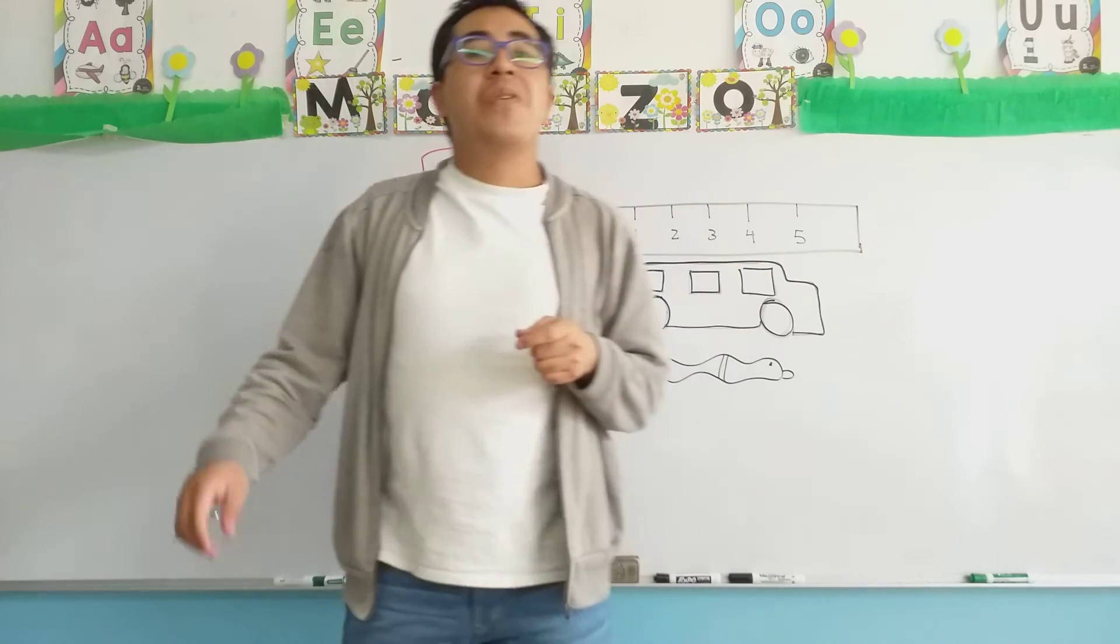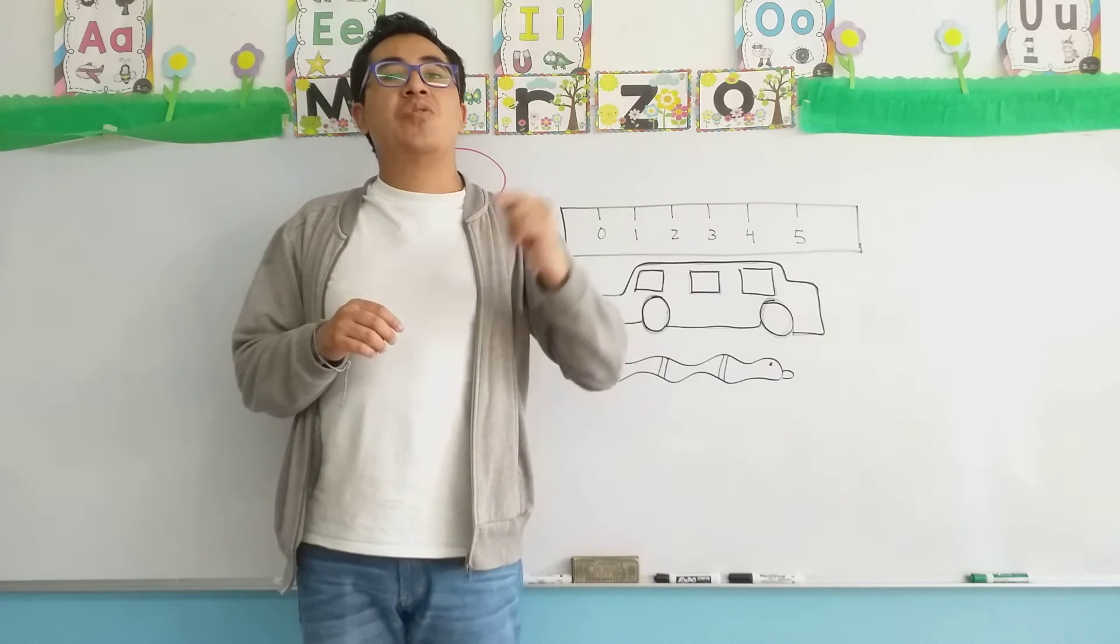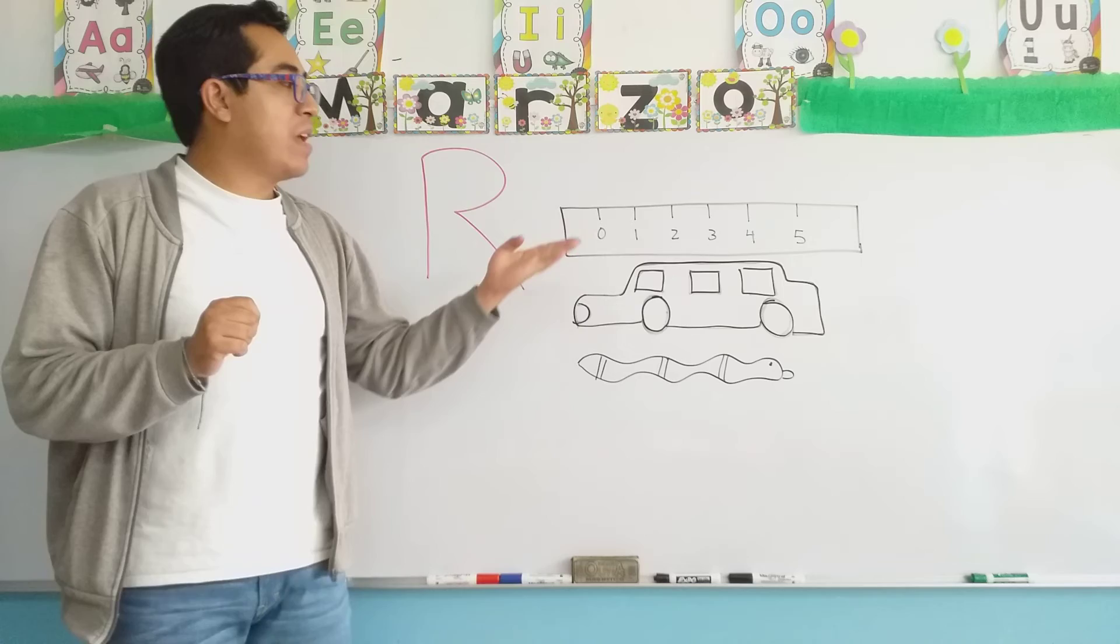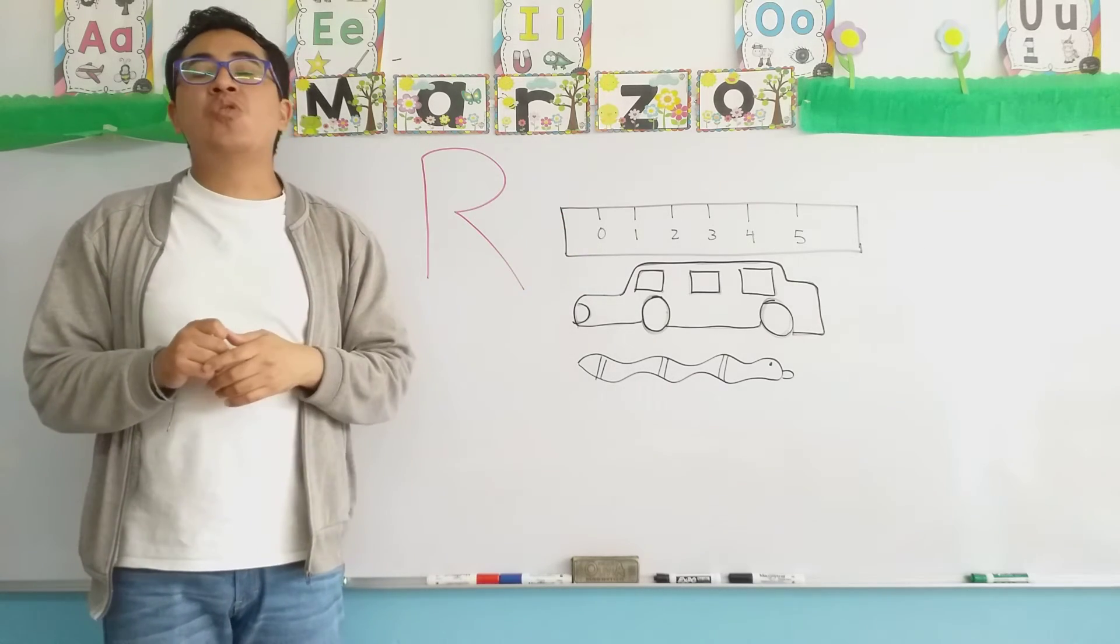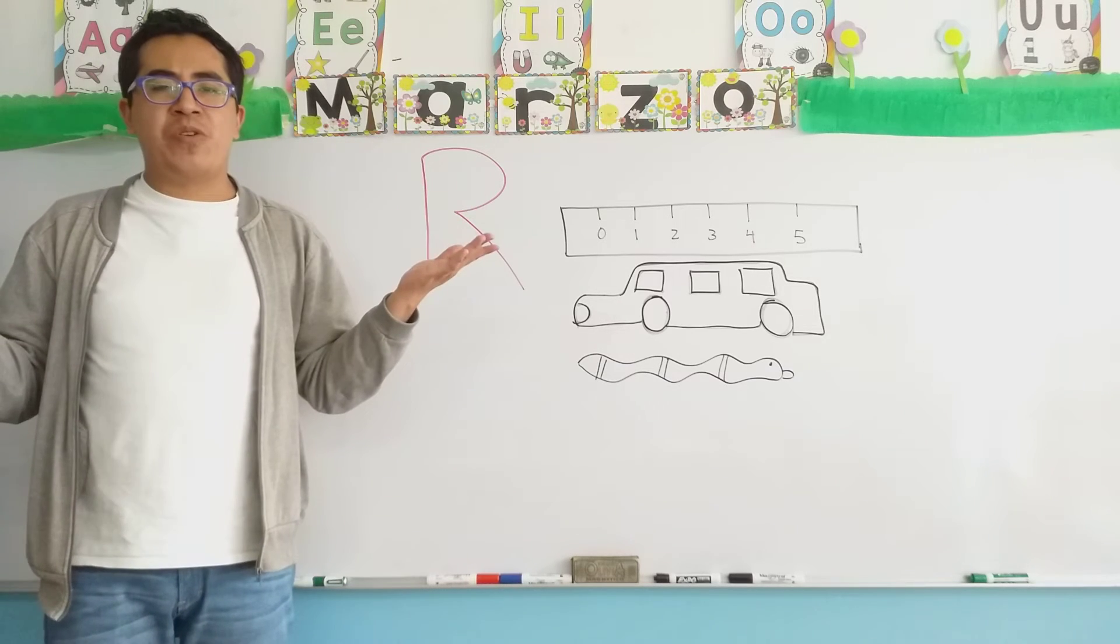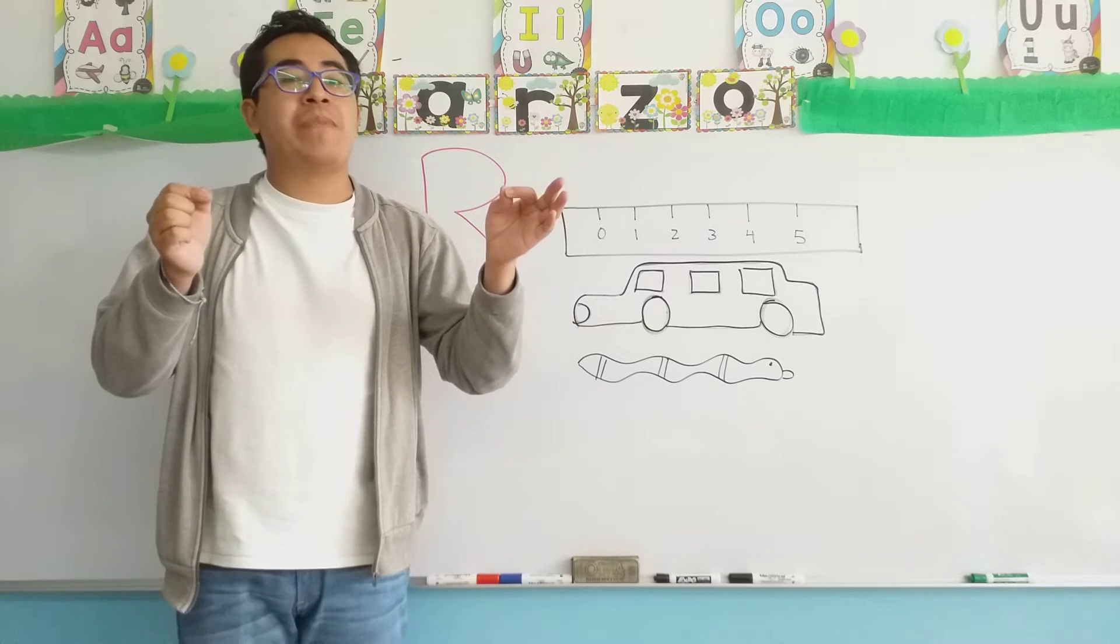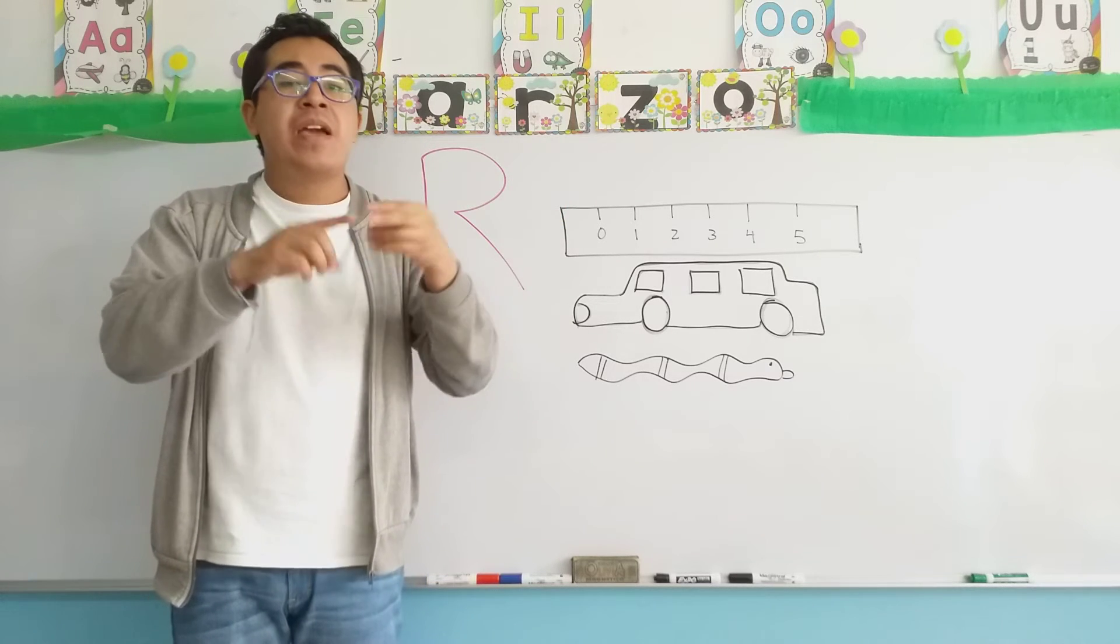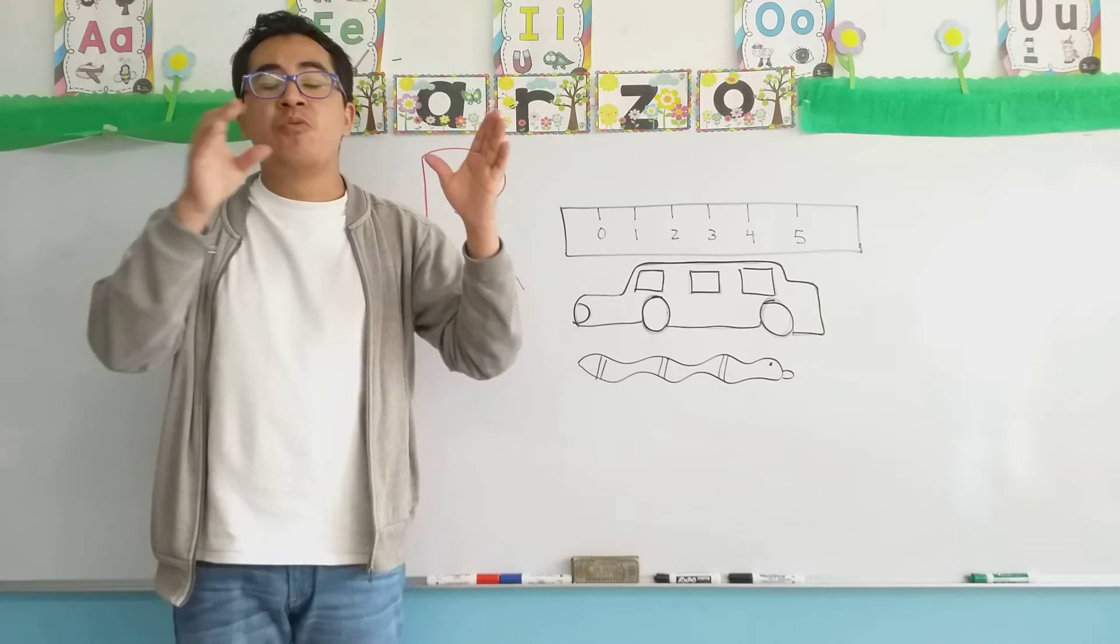So, for capital R, the letter that we started yesterday, today we have the ruler. Now, the word ruler uses capital R. Now, what is a ruler? First of all, the ruler is an object that is made of plastic or wood. And we use it as a measuring object.